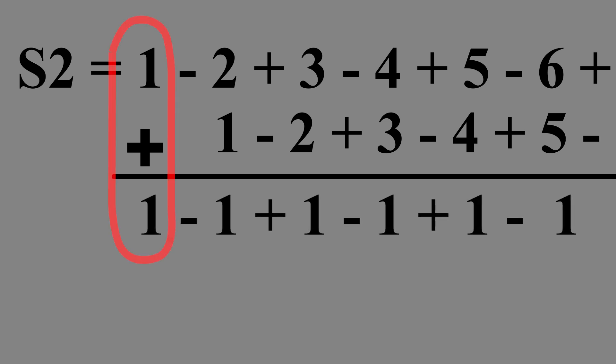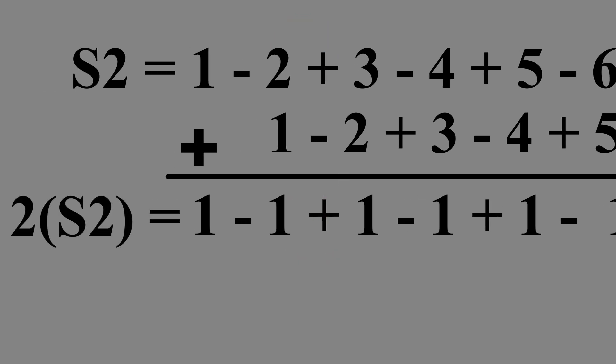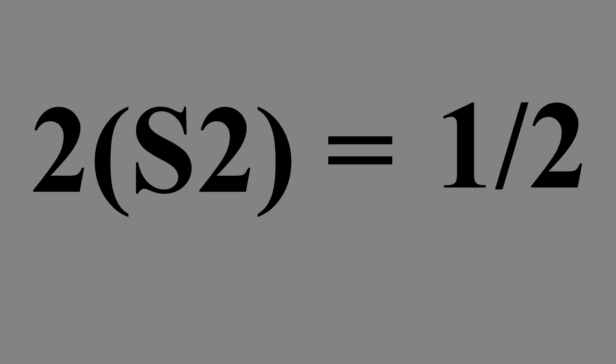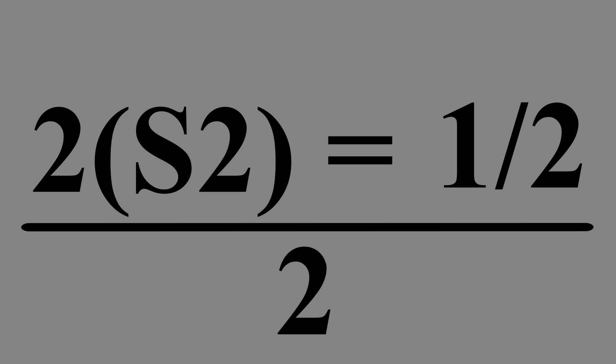1 plus 0 is just 1. Negative 2 plus 1 is negative 1. Positive 3 plus negative 2 is positive 1. This continues on and on, showing that S2 plus S2, or 2S2, is equal to Grandi series. If we divide by 2, then we find that S2 is equal to one-fourth.